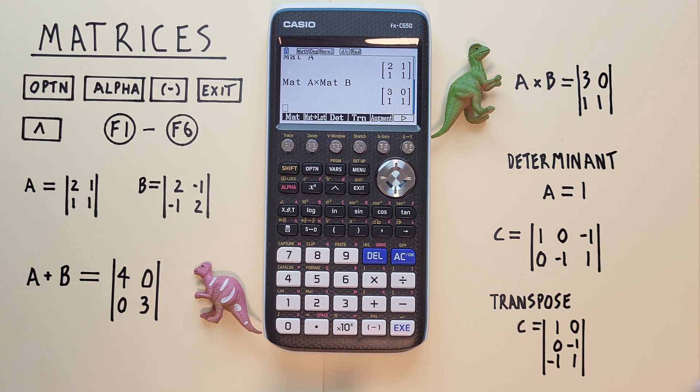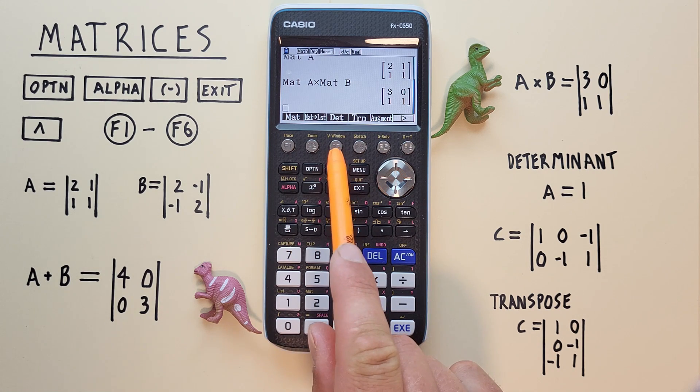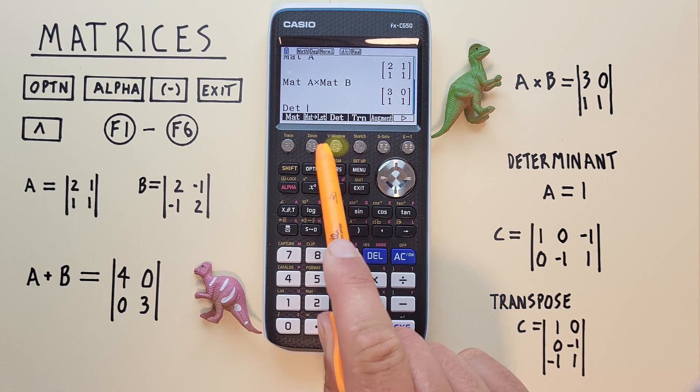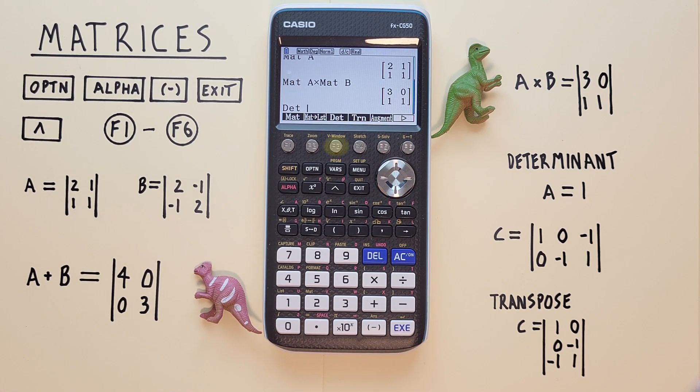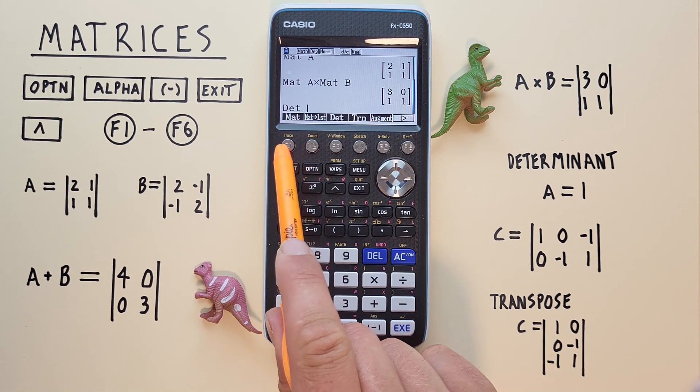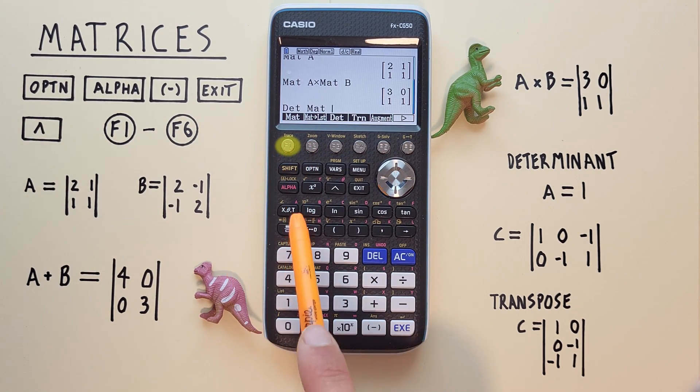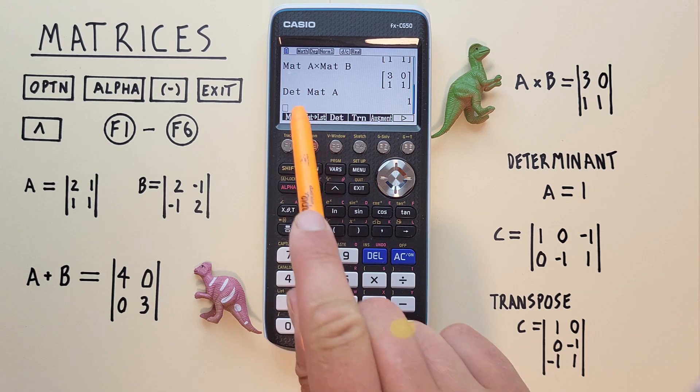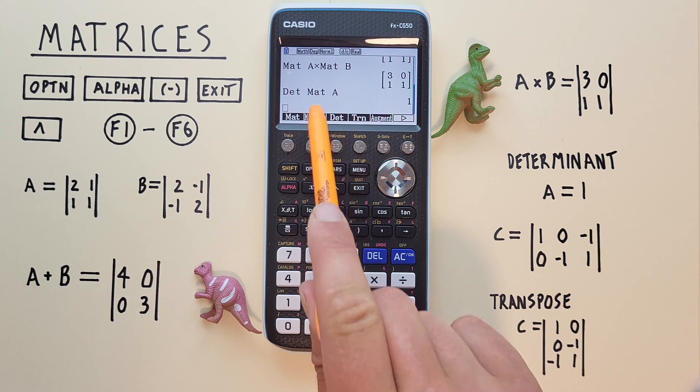What if we want to find the determinant of a matrix? Well to do that we use the F3 option here. If we want to find the determinant of our A matrix, all we have to do is hit F3 determinant, and then choose F1 for the matrix, and then alpha A. Hit EXE, and we see we get the determinant of our A matrix is 1.